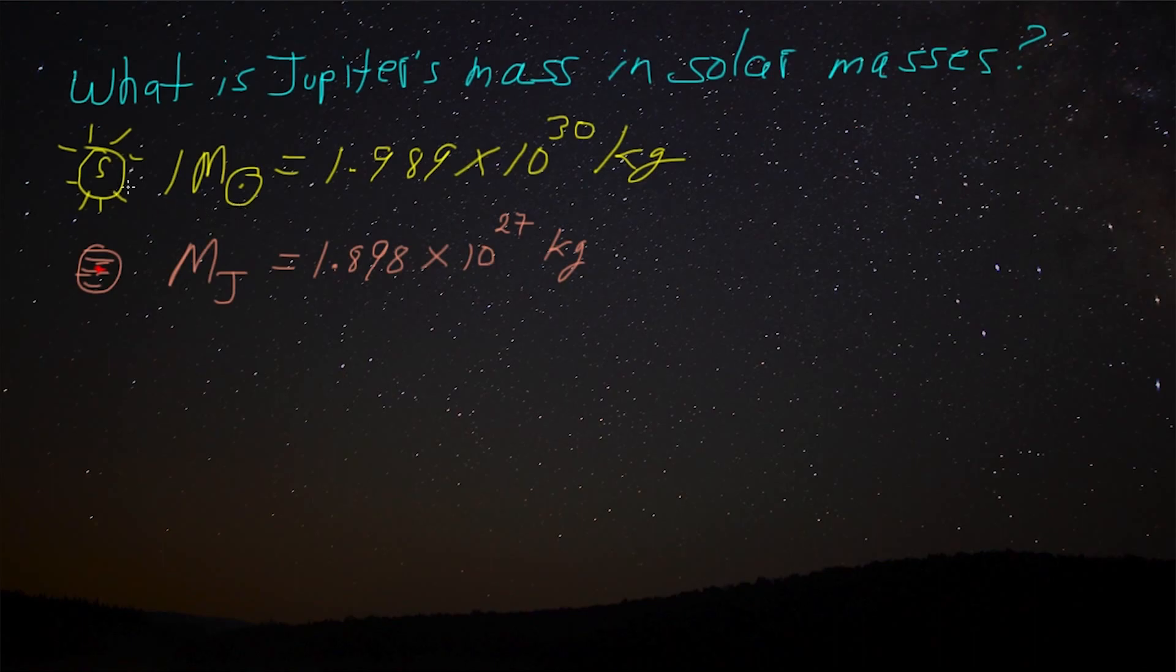So here's our sun, it's one solar mass, and we learned earlier that it's also 1.989 times 10 to the 30 kilograms. Now the mass of Jupiter happens to be 1.898 times 10 to the 27 kilograms.